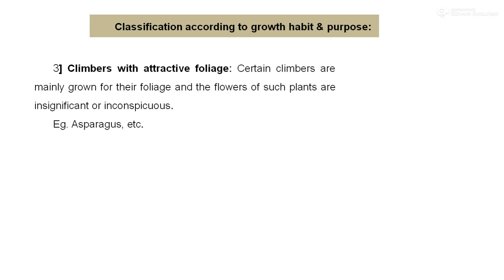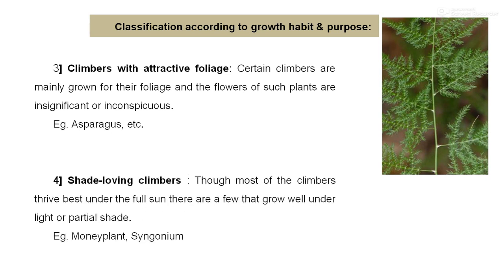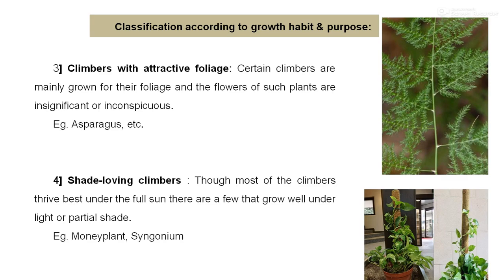The third category is clambers with attractive foliage. Certain clambers are mainly grown for their attractive foliage, and the flowers of such plants are insignificant. These come under the category of clambers with attractive foliage, like asparagus. And shade-loving plants — the main utility of this type of shade-loving clamber is for indoor beautification. Though most clambers thrive best under full sun, there are a few that grow well under light or partial shade, like money plant and syngonium, which are considered important shade-loving clambers.